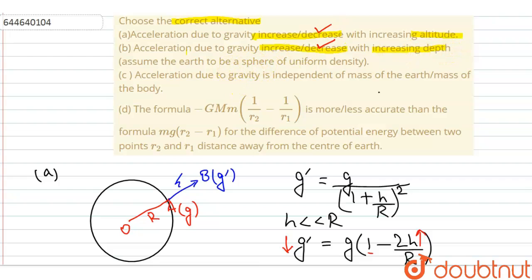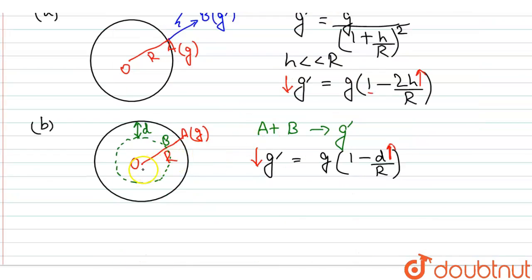Here we have assumed that the Earth is a sphere of uniform density, so rho remains constant.